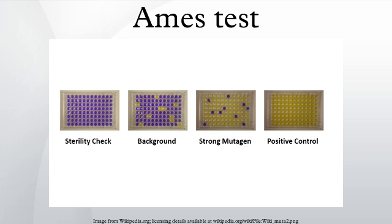The bacteria are spread on an agar plate with a small amount of histidine. This small amount allows the bacteria to grow for an initial time and have the opportunity to mutate. When the histidine is depleted, only bacteria that have mutated to gain the ability to produce their own histidine will survive. The plate is incubated for 48 hours, and the mutagenicity of a substance is proportional to the number of colonies observed.